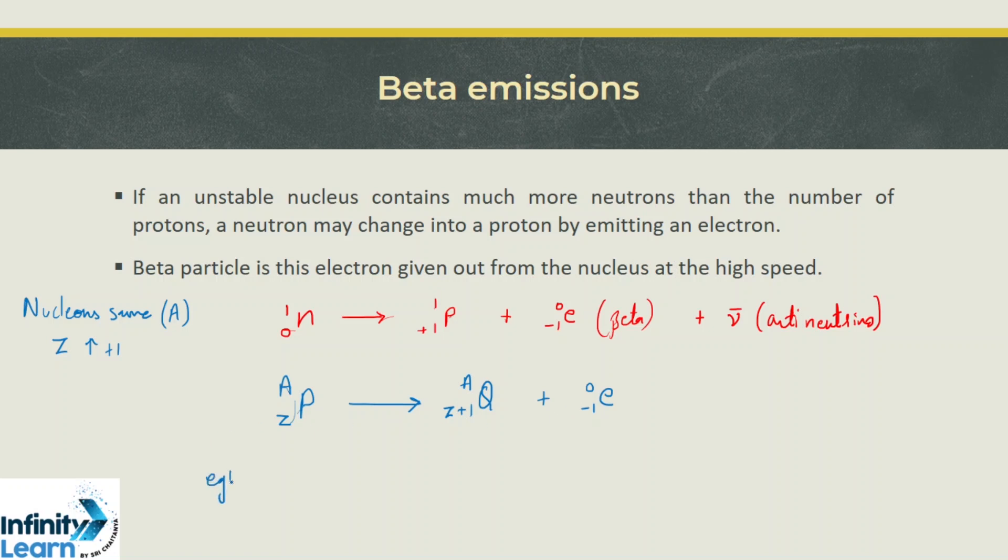Let us take an example of carbon isotope C-14. If the atomic number increases by one, it becomes seven, which is nitrogen, with atomic number 7. The mass number remains 14, and there is emission of an electron or beta particle.